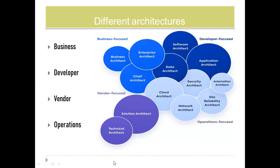Multiple people will be involved — a solution architect might be one person. But apart from the solution architect, people who have knowledge over the business are also called business architects. People working on data analysis and data management are called data architects. People working on applications are called application architects. This is how generally the differences work.